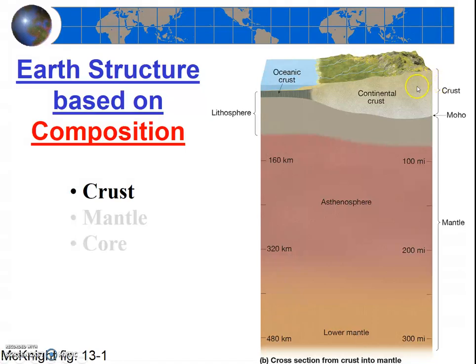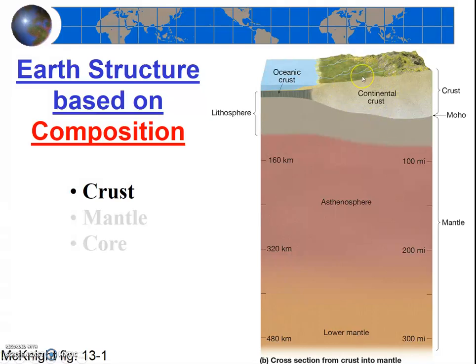The continental crust is much thicker than the oceanic crust—on average about 25 miles thick. This granite that makes up the continental crust is much less dense than the oceanic crust, with a density of about 2.7 grams per centimeter cubed.